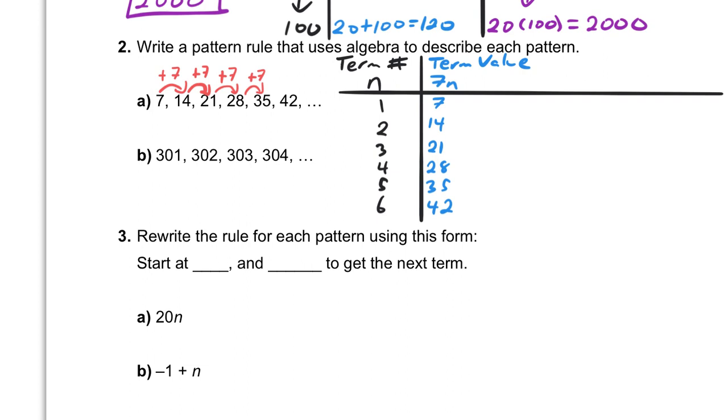So the pattern rule using algebra here is 7 times n. There it is. Then we're going to do the same thing for the next one. Let's add a column to our table of values.